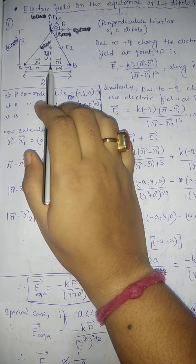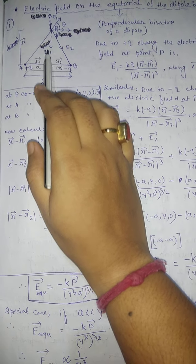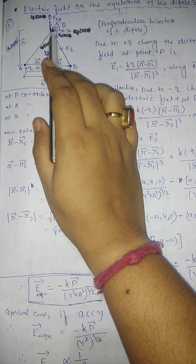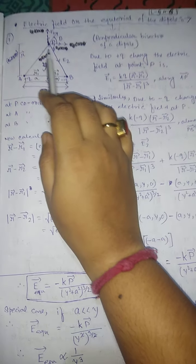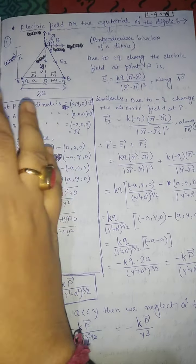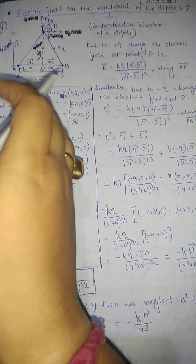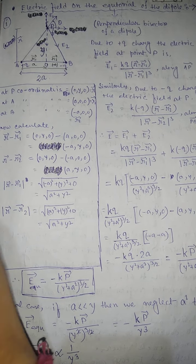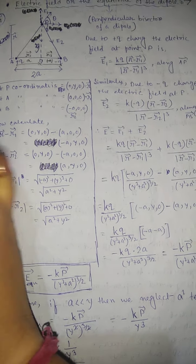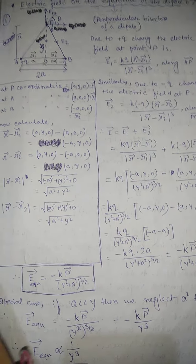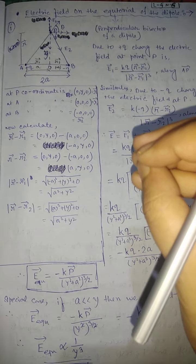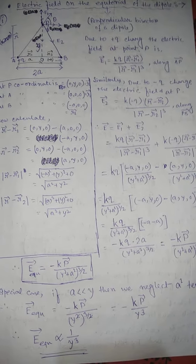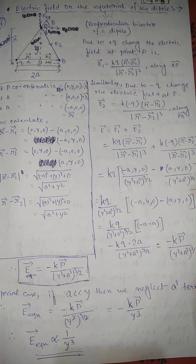From O, at a distance y, we consider a point P where we calculate the electric field. As in the previous video, we discuss two methods — one using vector notation with position vectors and coordinates, and another normal method.